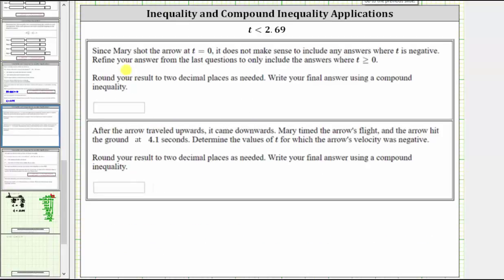For the next part, since Mary shot the arrow at t equals zero, it does not make sense to include any answers where t is negative. Refine your answer from the last question to only include the answers where t is greater than or equal to zero, which means we need a compound inequality.